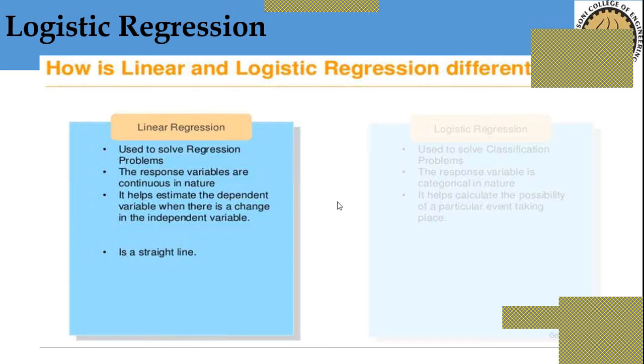The response variables are continuous in nature means you can increase the salary of an employee by 5,000, 10,000, 15,000, 12,000, 18,000. So there is a continuous increment. That is called continuous in nature.